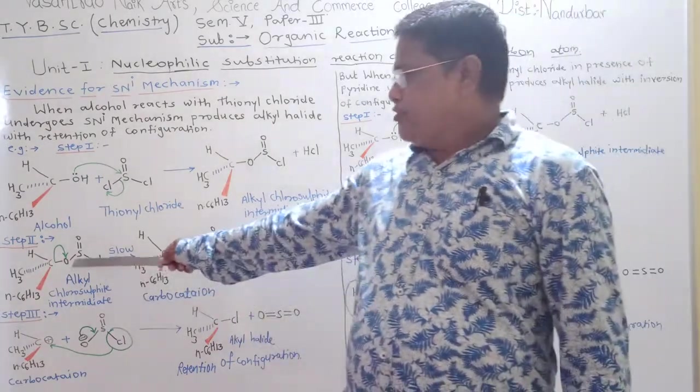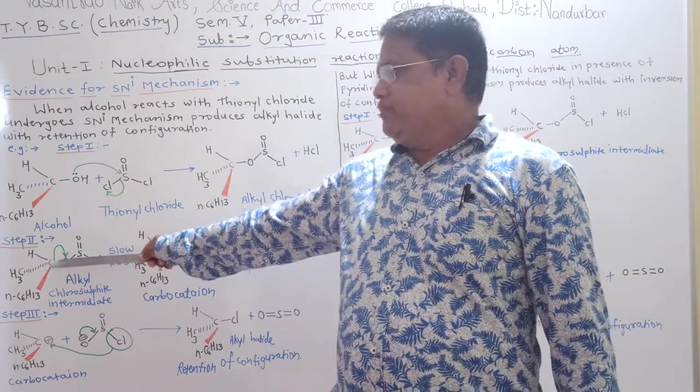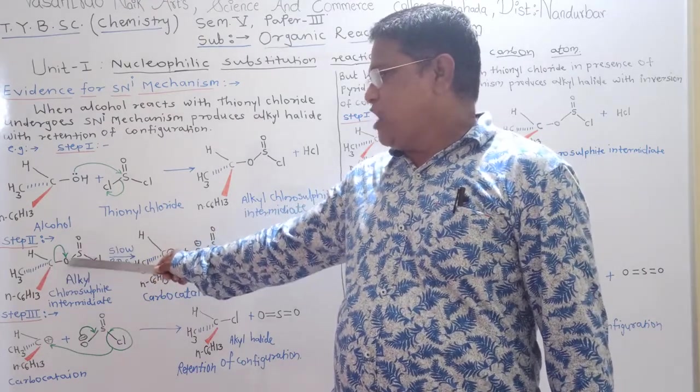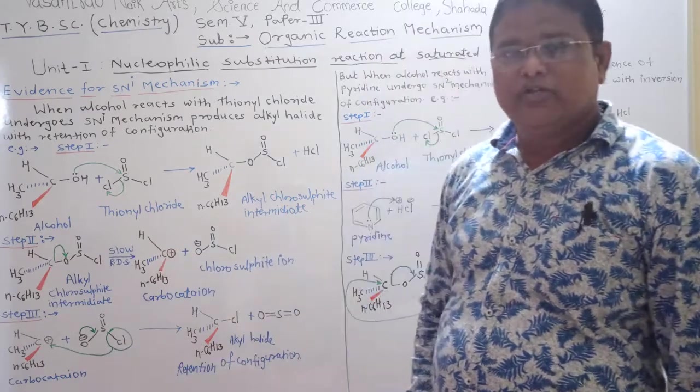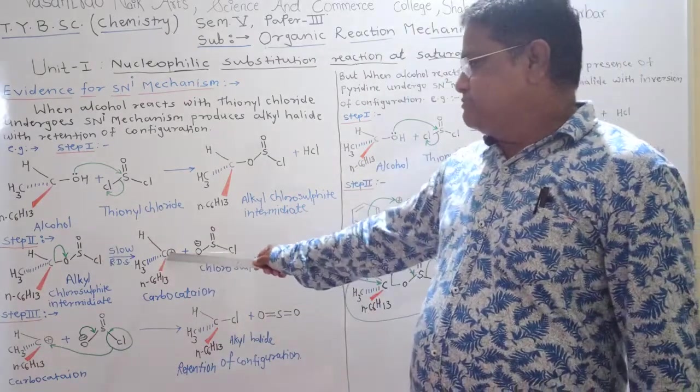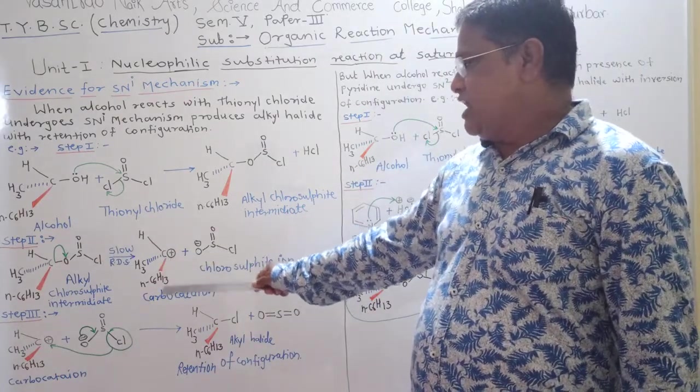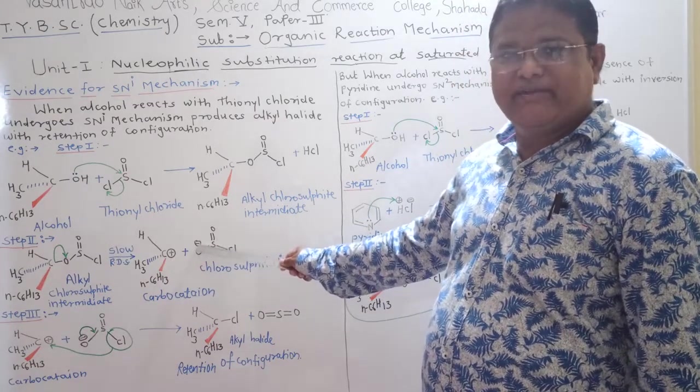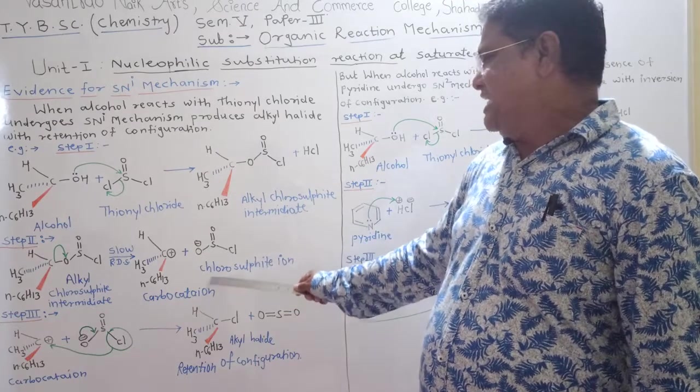In this step, oxygen is more electronegative as compared to carbon atom. So, oxygen attracts this bond pair toward itself. So, carbon atom becomes electron deficient called as carbocation and oxygen atom becomes electron rich denoted by negative charge called as chlorosulphite ion.